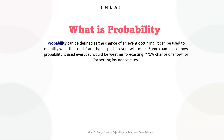Probability is a measure of the likelihood or chance of an event occurring. It's a quantitative concept that ranges from zero, meaning impossible, to one, meaning certain.